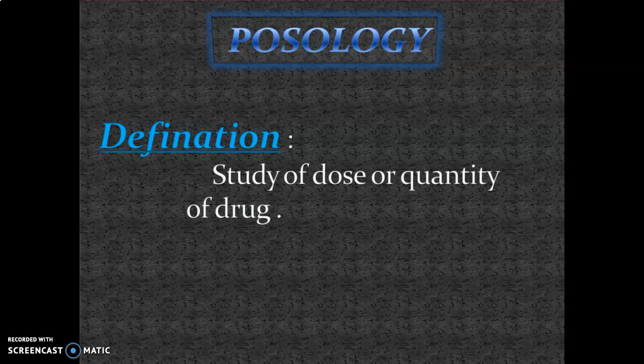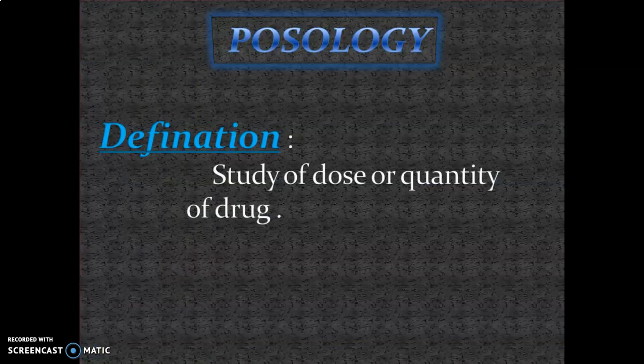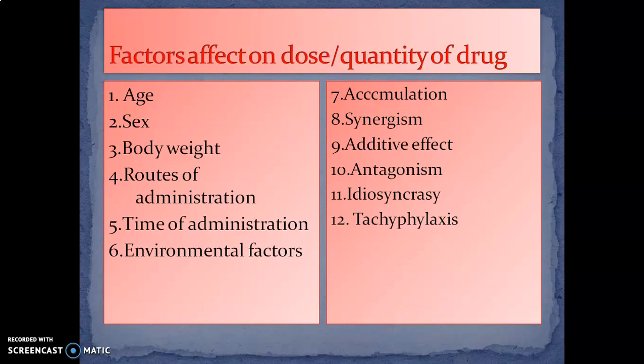Remember, Posos means 'how much' and Logos means 'science.' Next, what are the factors affecting the calculation of dose or quantity of drug? A full question may be asked in the examination, or an individual factor may be asked as a short note — like synergism, antagonism, additive effect, idiosyncrasy, or tachyphylaxis. These are the factors which affect the calculation of dose or quantity.